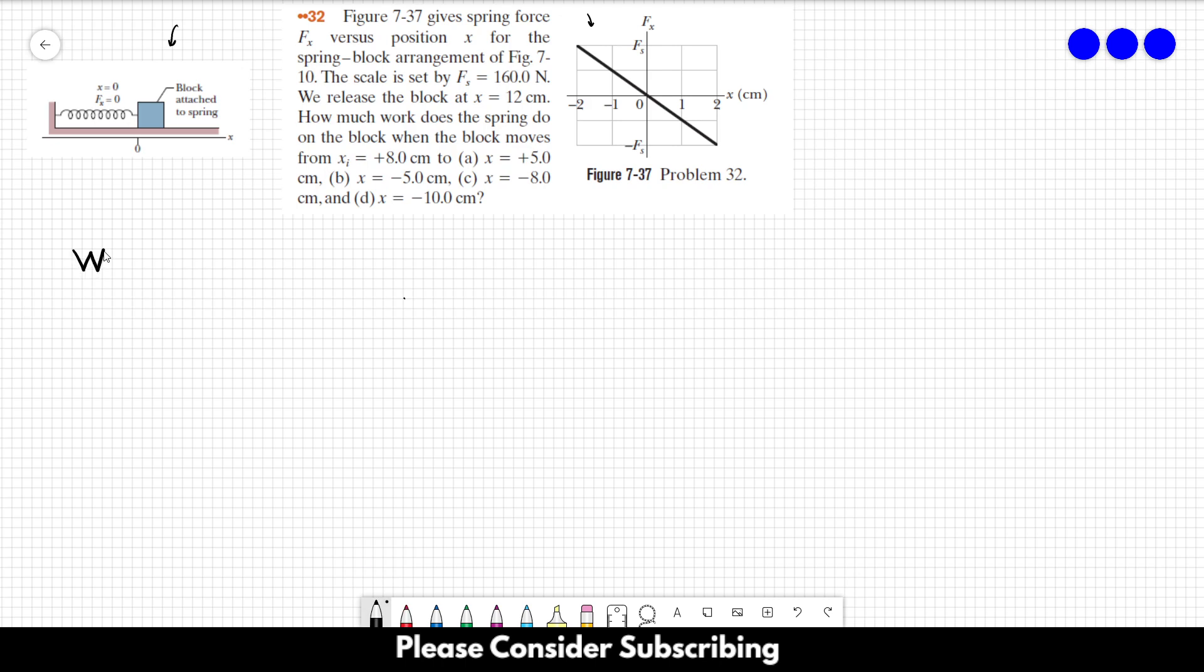So this problem is really easy, you just need to remember that the work done by the spring is equal to 1 over 2k, the initial position squared, minus 1 over 2k, the final position squared. So if we have the initial position and the final position, the only thing that we need is the spring constant. So if we have the spring constant, that's pretty much it, then it's just calculations.